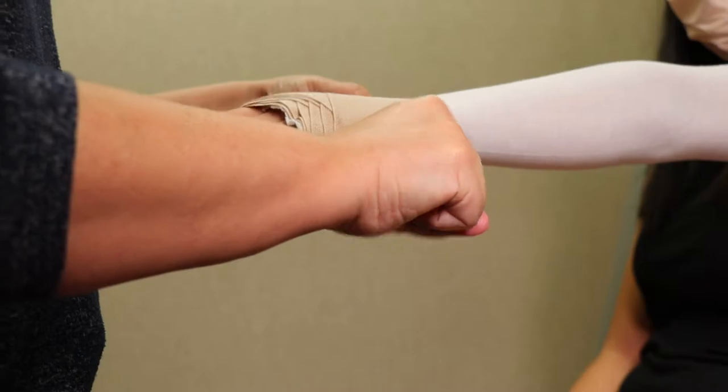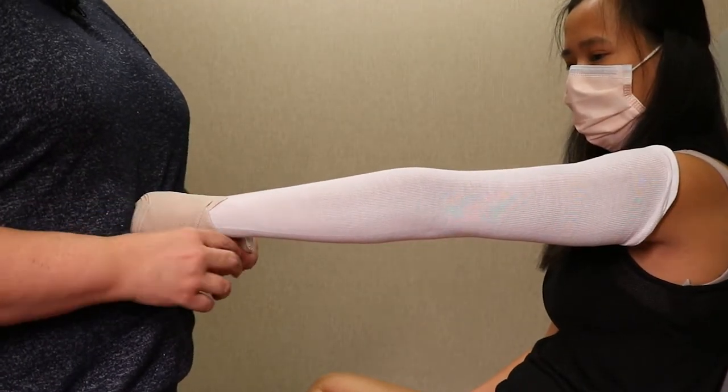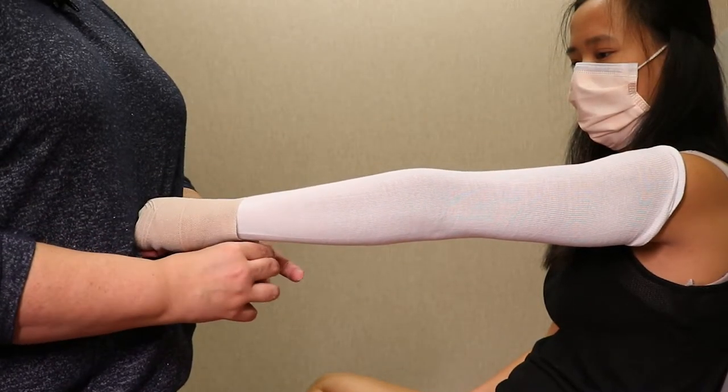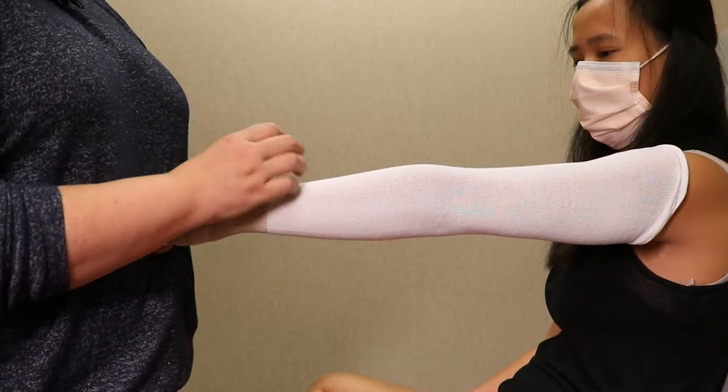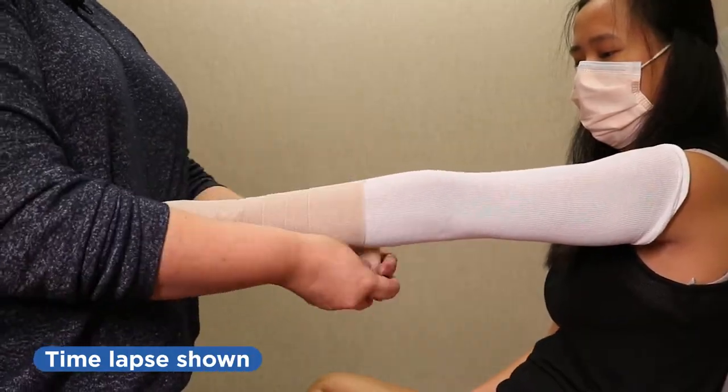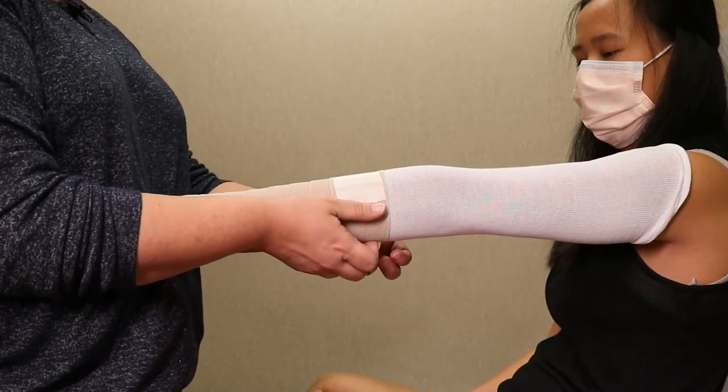Make a fist and press into someone who is helping you, or a wall, as you continue to overlap your bandage by half, continuing up your arm. Secure the end of the bandage with tape.